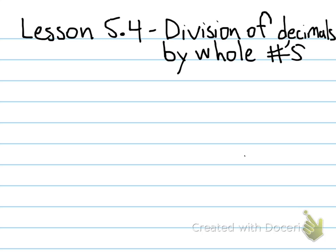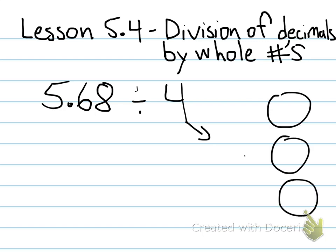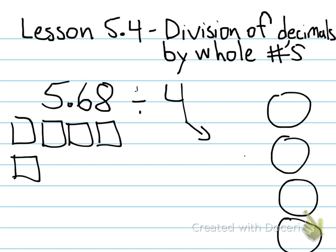First, just to review from Lesson 5.2, if we had a number like 5 and 68 hundredths divided by 4, the way we would model that is we would take the divisor, which tells us how many groups we have, and we would model what 5 and 68 hundredths would look like with our QuickPix using our base 10 blocks as a guide. Those 5 squares stand for the 5 holes, we'll use our 6 sticks to represent our 6 tenths, and we'll have our 8 hundredths by creating 8 dots.